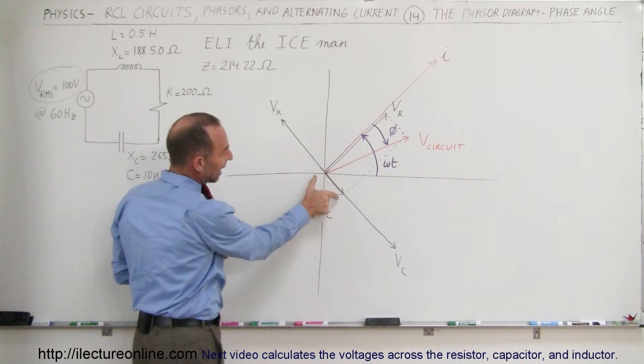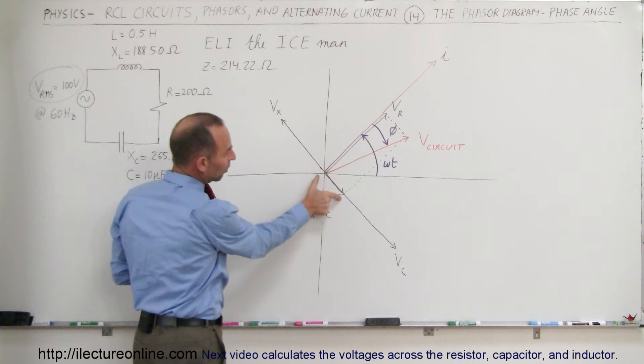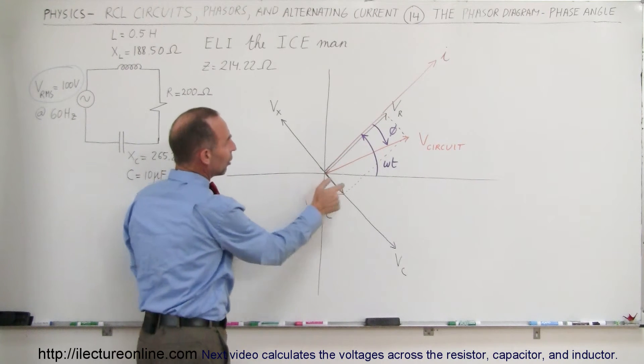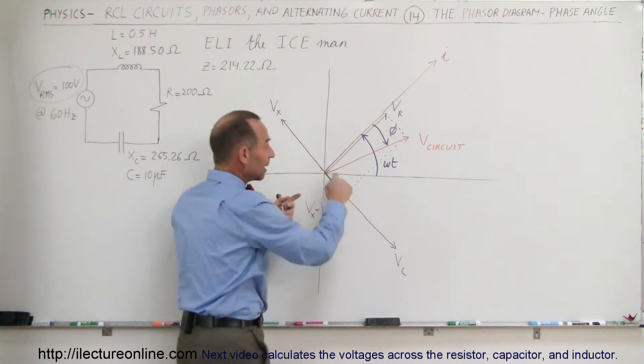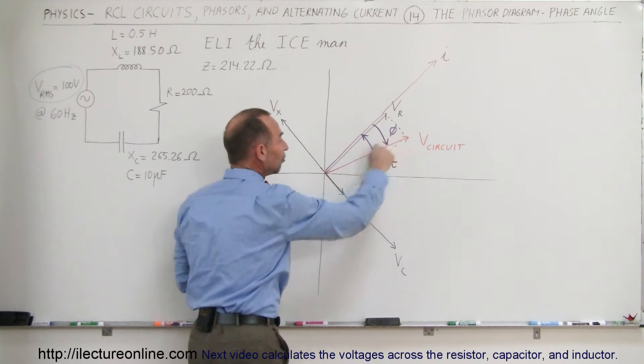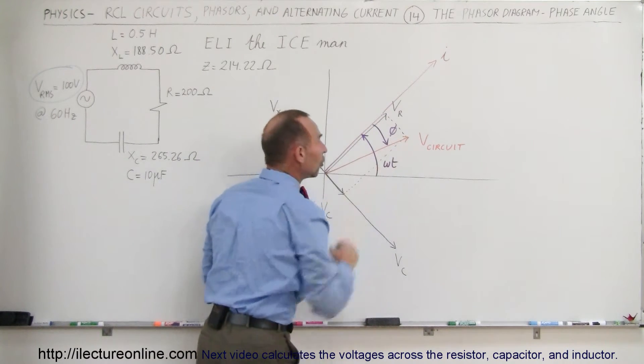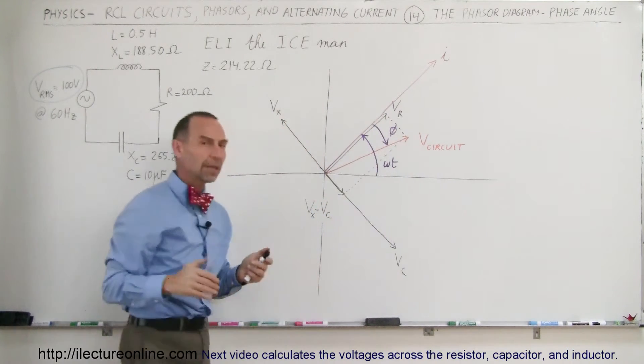We then add the voltage across the capacitor-inductor combination together with the voltage across the resistor vectorially, and you'll get the voltage across the whole circuit.